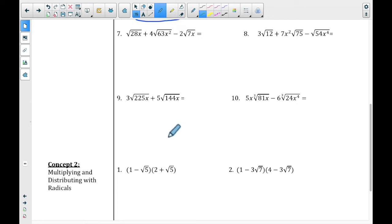For number 9, this is actually, 225 is a perfect square, isn't it? The square root of 225 is 15. So we have a 3, we have a 15, and we have a radical x. And then 5, the square root of 144 is 12. So that's a perfect square. And we again have the radical x. So this is 45 radical x plus 60 radical x. And if we add those together, we get 105 radical x.